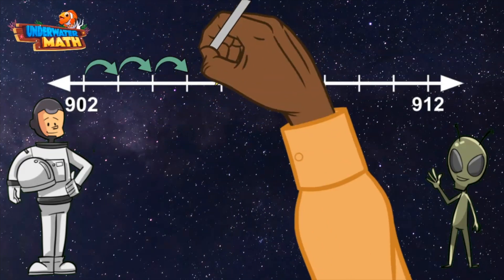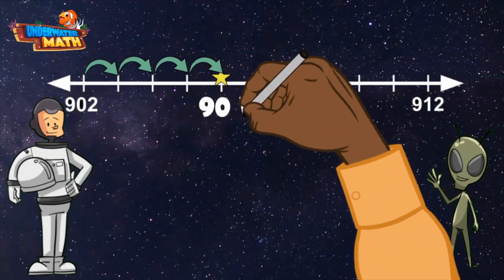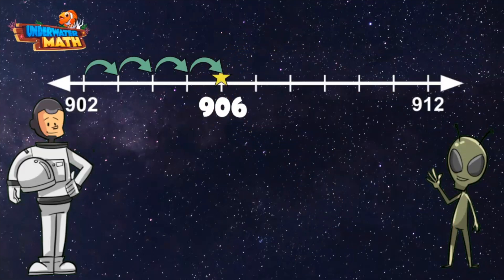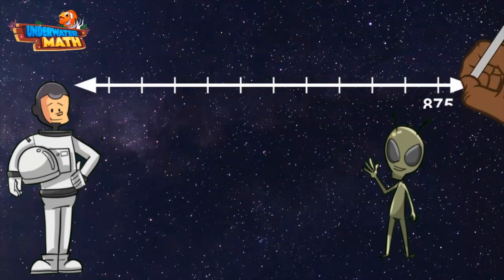904, 905, 906. Got it! The star represents the number 906. All right Lenny, give me another one.